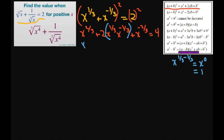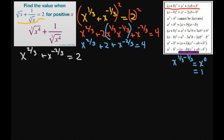Alright, so let's rewrite this. We have x to the power of 2/3 plus 2 times 1 plus x to the power of negative 2/3 equals 4. If I subtract 2 from both sides, I get x to the power of 2/3 plus x to the power of negative 2/3 equals 2.